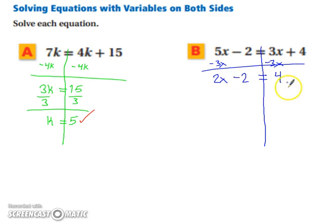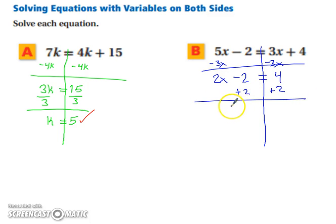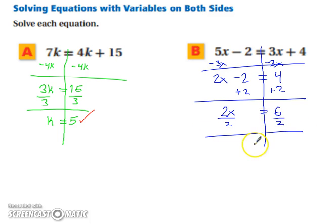Now this looks like one of those two-step equations we were practicing in the last section. We're going to add 2 to both sides of the equation, as we undo addition and subtraction first. That cancels out, and all we're left with is 2x, so 2x equals 6. Now we're going to divide both sides of the equation by 2, because the opposite of multiplying is dividing. This leaves us with x by itself on the left and 3 on the right.